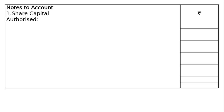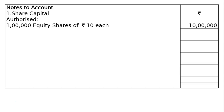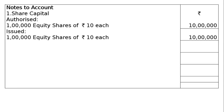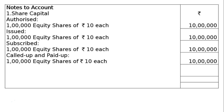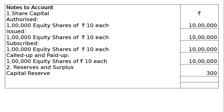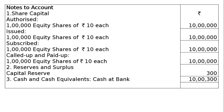Notes to Accounts. Note 1 - Share Capital: Authorized: 1 lakh equity shares of Rs.10 = Rs.10 lakhs. Issued: 1 lakh equity shares = Rs.10 lakhs. Subscribed: 1 lakh equity shares = Rs.10 lakhs. Called up and paid up: Rs.10 lakhs (D's shares were forfeited and reissued, so called up and paid up remains Rs.10 lakhs). Note 2 - Reserves and Surplus: Capital Reserve (profit on forfeiture and reissue of shares) = Rs.300. Note 3 - Cash and Cash Equivalents: Cash at bank = Rs.10,00,300. This is our final answer.